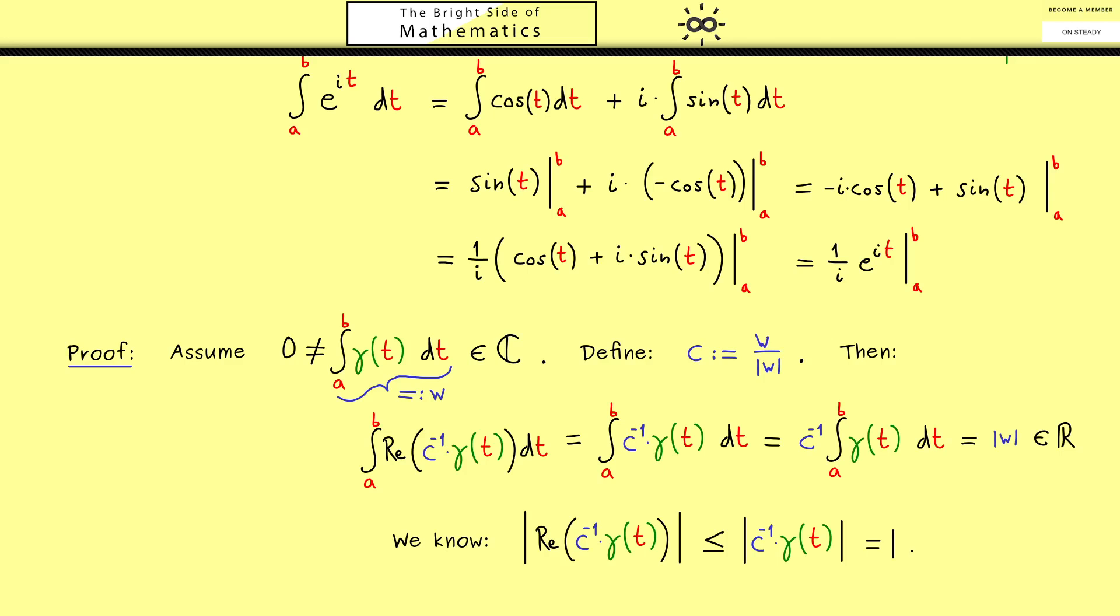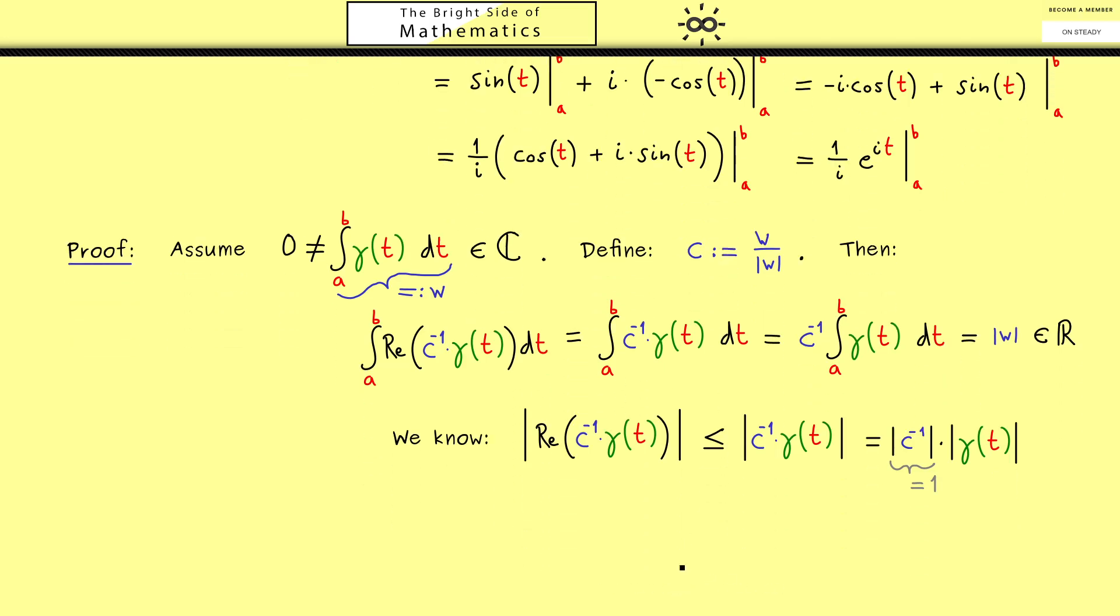Also the absolute value is multiplicative. Hence we can split it up and then we have here the absolute value of c inverse. However this complex number lies on the unit circle by definition. More concretely the absolute value is equal to 1. And now here you should see we have an inequality for real functions. Hence we can use the monotonicity of the ordinary Riemann integral. This means that the inequality still holds when we look at the corresponding integrals.